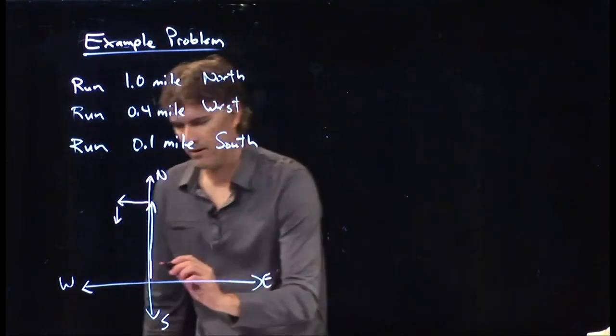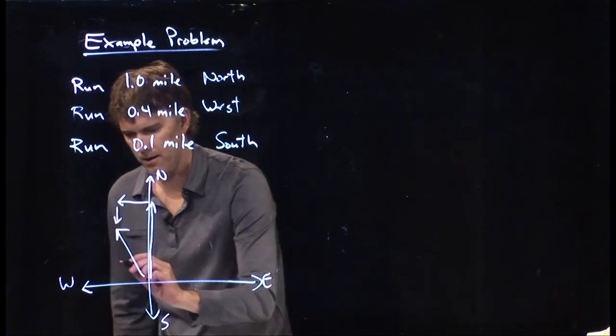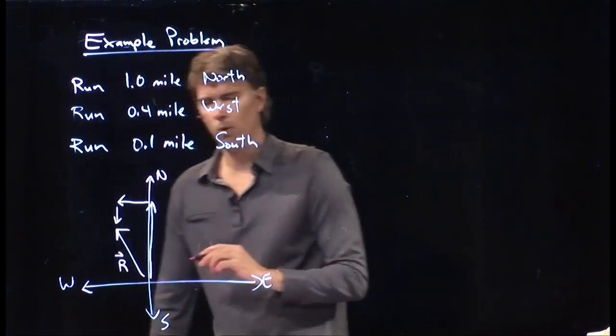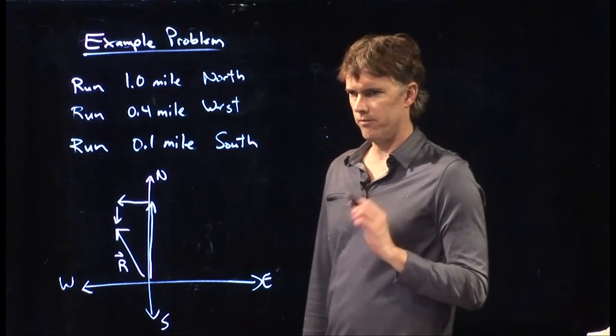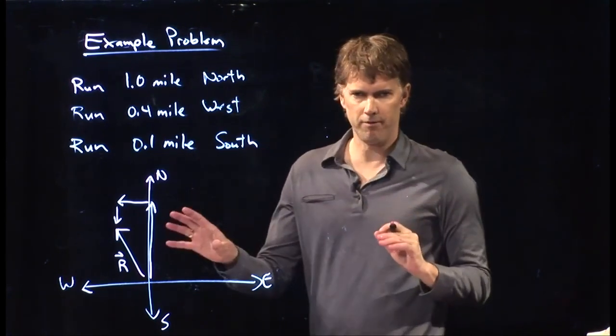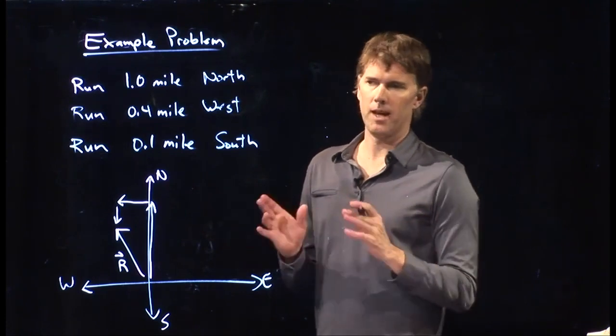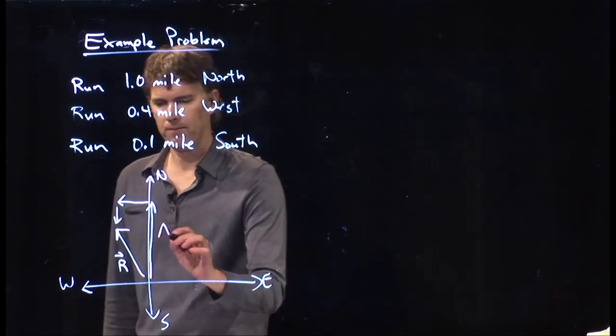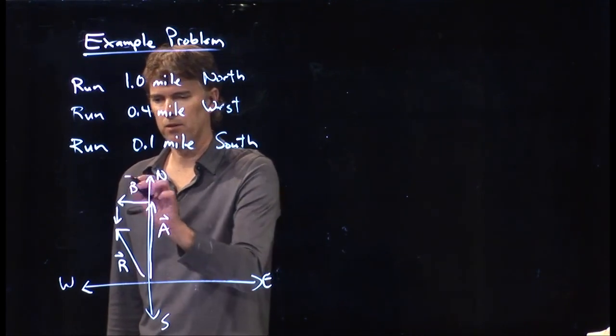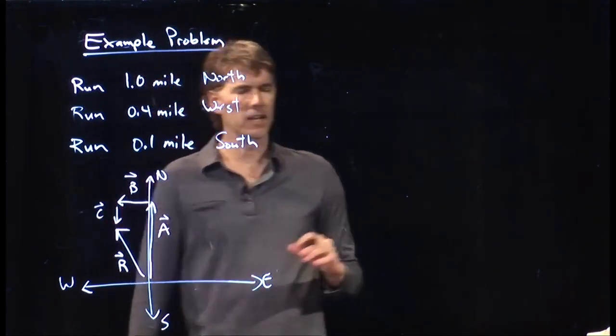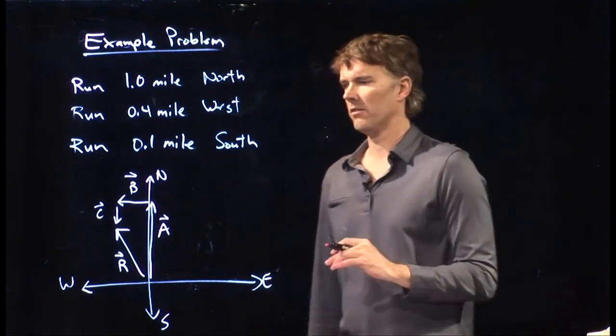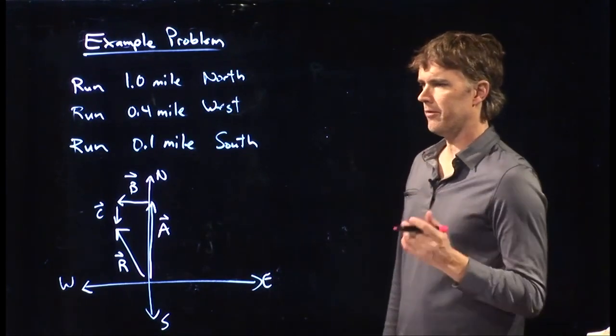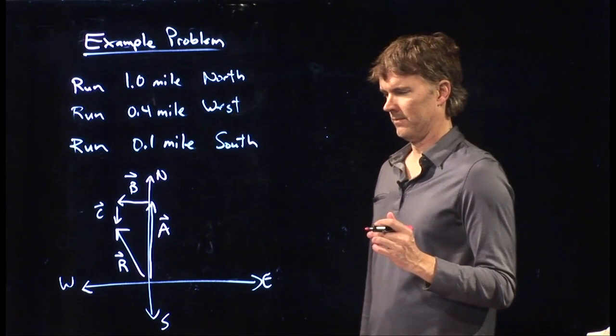And we want to figure out this guy right here. What is that r vector? Once you identify the vector, you know everything about it. You know the length, and you can calculate the angle. So all we need is the vector. And let's label these a, b, and c. And let's figure out how to write these things in terms of the unit vectors that we just talked about.